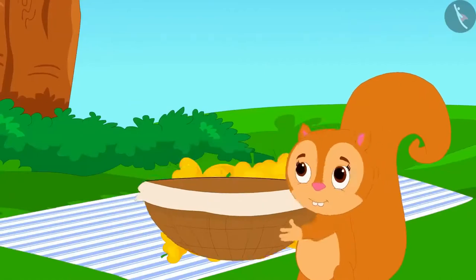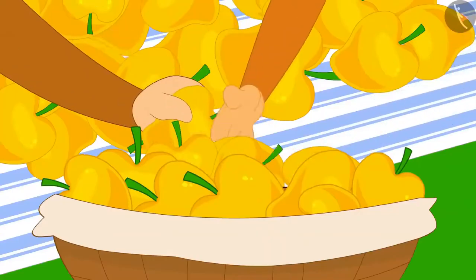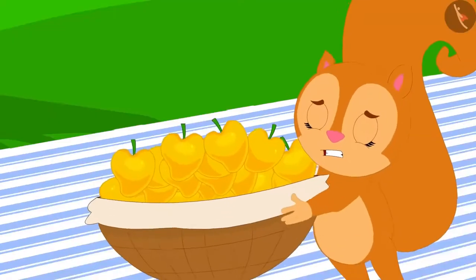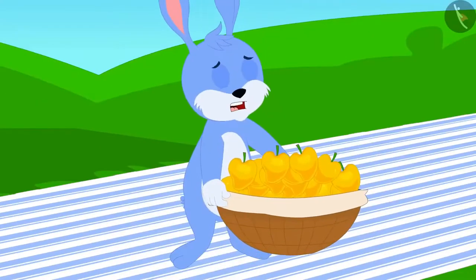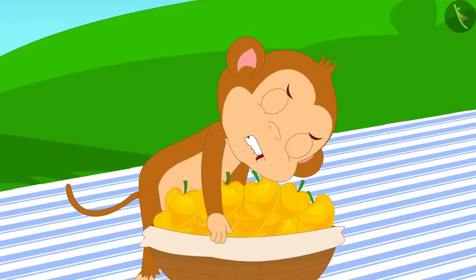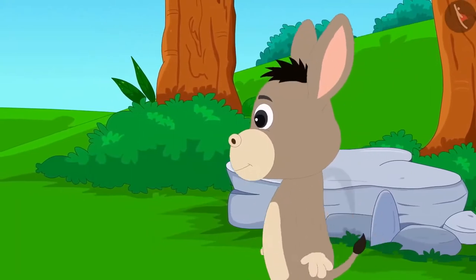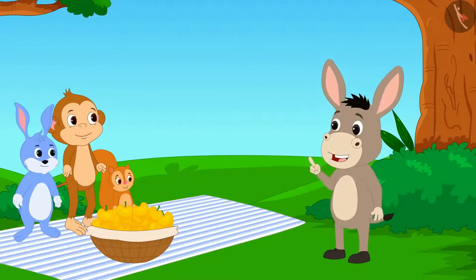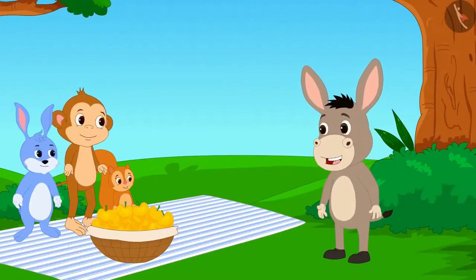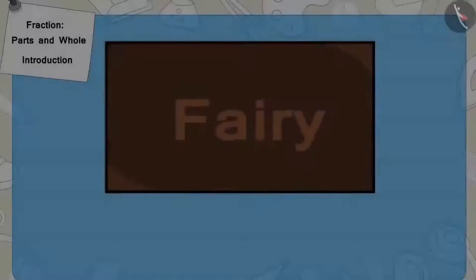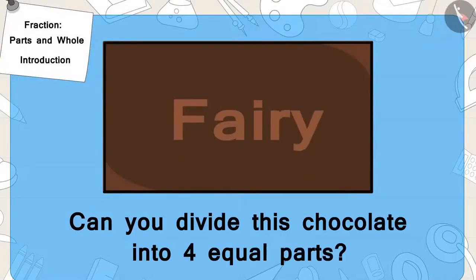Chanda agreed and filled all the mangoes in the basket. But when they tried to lift the basket, it was too heavy and none of them were able to lift it. Just then, Bholla the donkey was passing by. Bholla also decided to help and in return he too asked for an equal share of chocolate. Now, can you divide this chocolate into four equal parts?